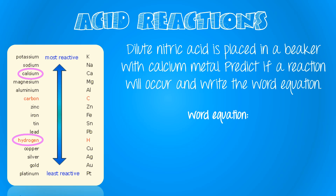We can write this through a word equation. We represent our reactants as given to us in the question, followed by our products. We know that hydrogen gas is produced. The last thing is our salt — the first part of the name comes from the metal, and the second part comes from the acid, giving us calcium nitrate.